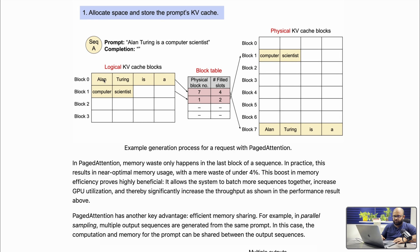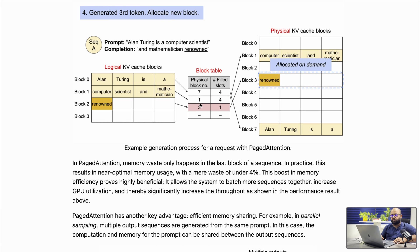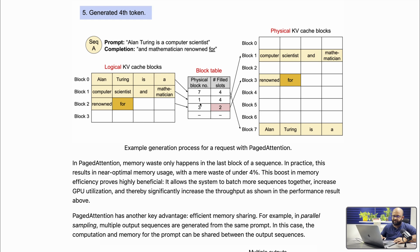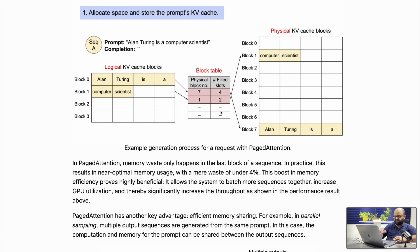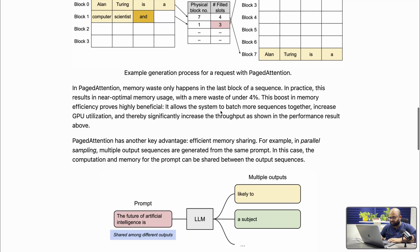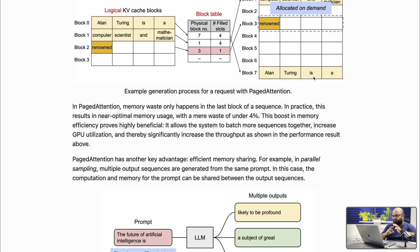Block 0 contains 'Alan Turing is,' and the block table has the exact information of the filled physical block and how many slots are occupied. Every time a new token is added to the block, the number of filled slots also increases. This is a high-level view of the implementation — the actual implementation is much more complicated.